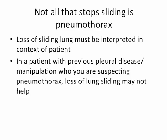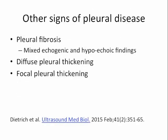If you're suspecting a patient might have a pneumothorax and you're ultrasounding them to assess this, if they've had previous pleural manipulation or previous pleural disease, loss of lung sliding is not going to help you in your pneumothorax assessment. There are some more advanced signs at the pleura that can help narrow down your differential, including hypoechoic or echogenic pleural fibrosis or different patterns of pleural thickening, whether diffuse or focal. However, this is beyond the scope of the current discussion.